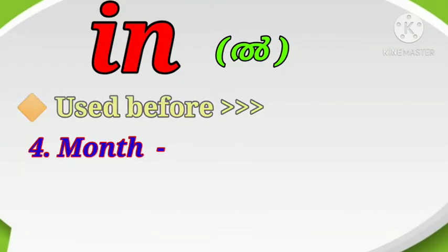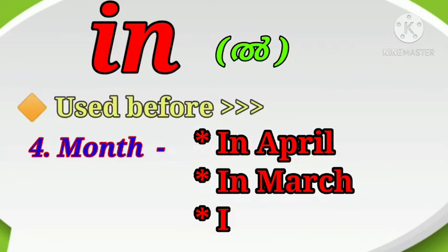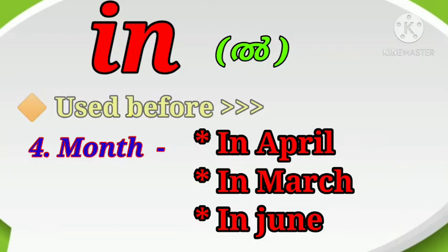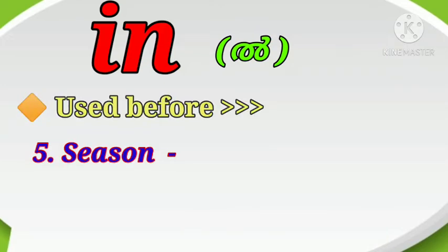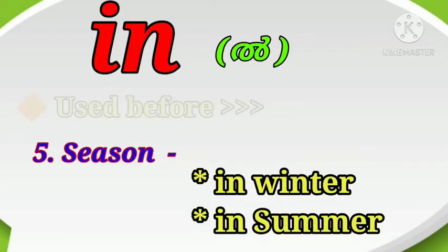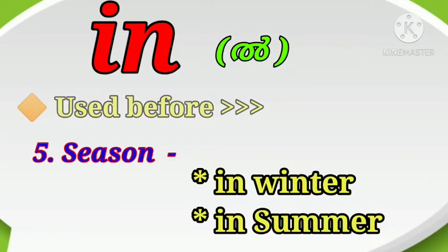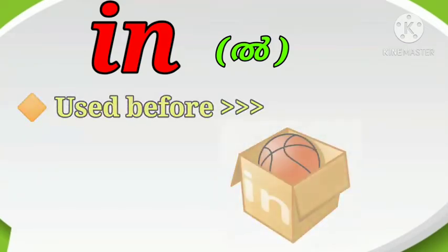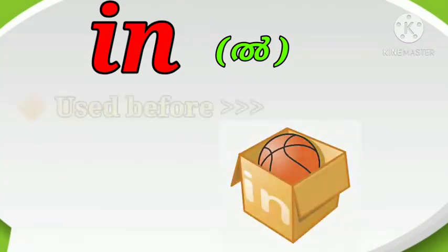'In' can be used before months — for example, in April, in March, in July. It can also be used before seasons — for example, in winter, in summer, in autumn. So the preposition 'in' is commonly used before any places, countries, big cities, months, years, and seasons, and it can also be used to mention the position of a particular thing.